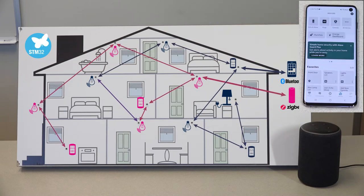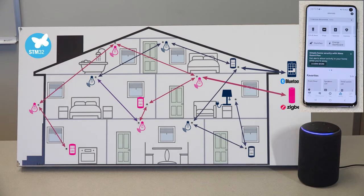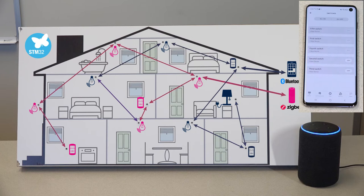Alexa, discover devices. [Alexa]: Starting discovery. This will take a few moments. Power on your new devices now and if needed put them in pairing mode. [Alexa]: I found and connected five new devices. Try saying turn off fourth switch.